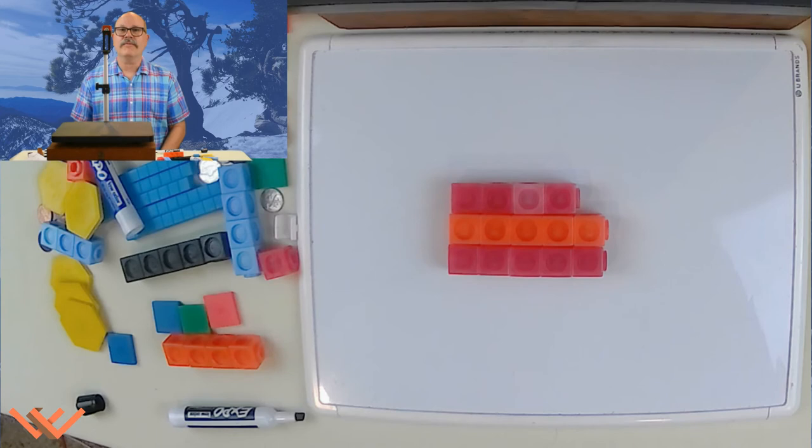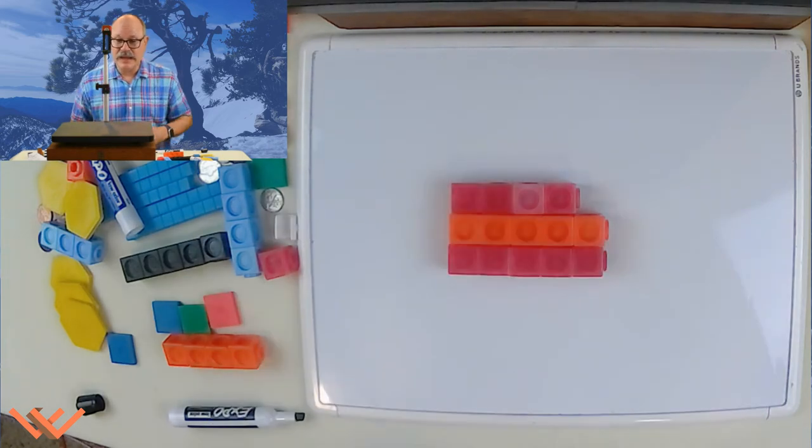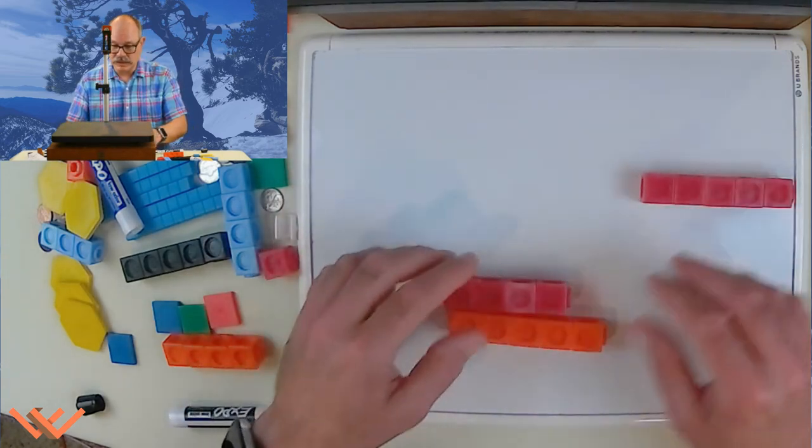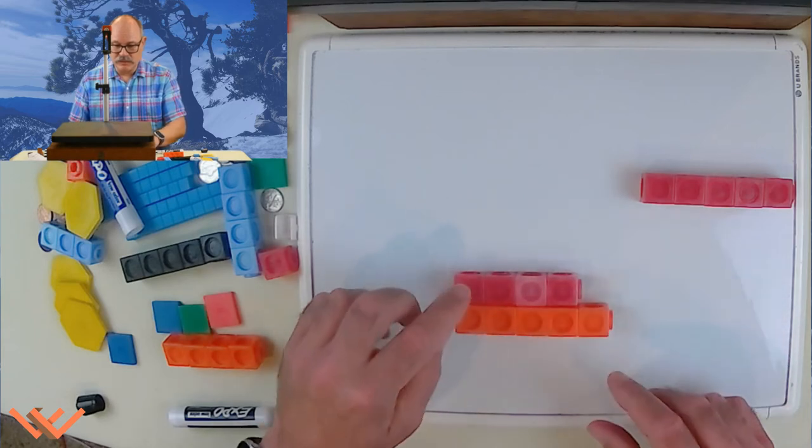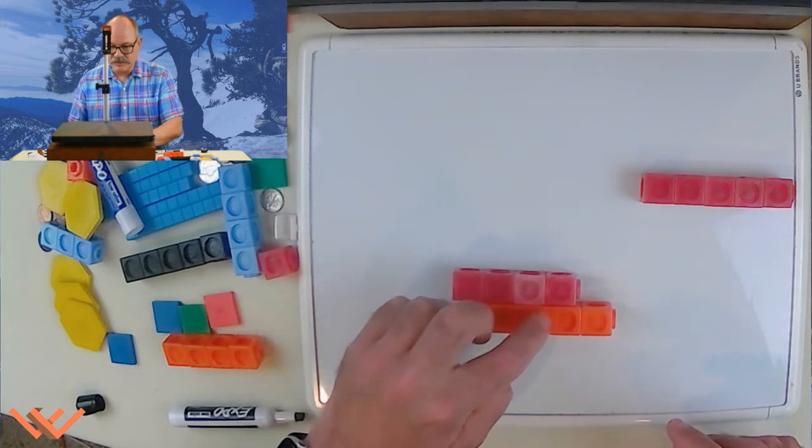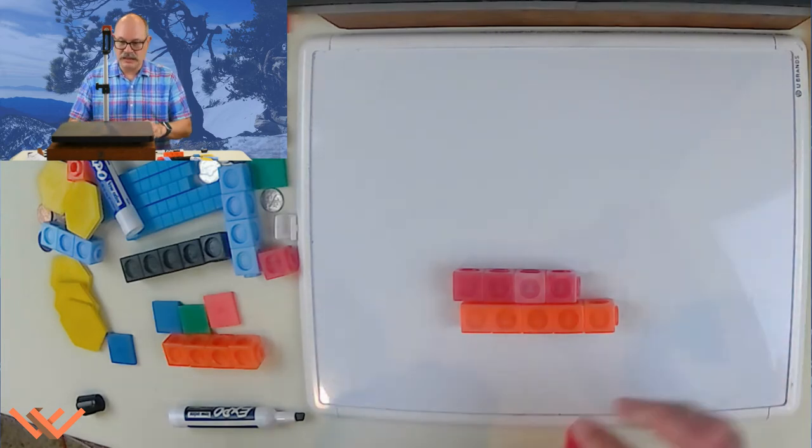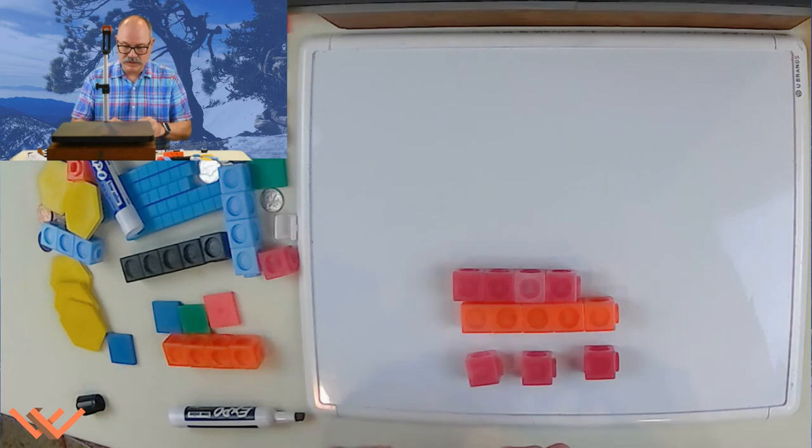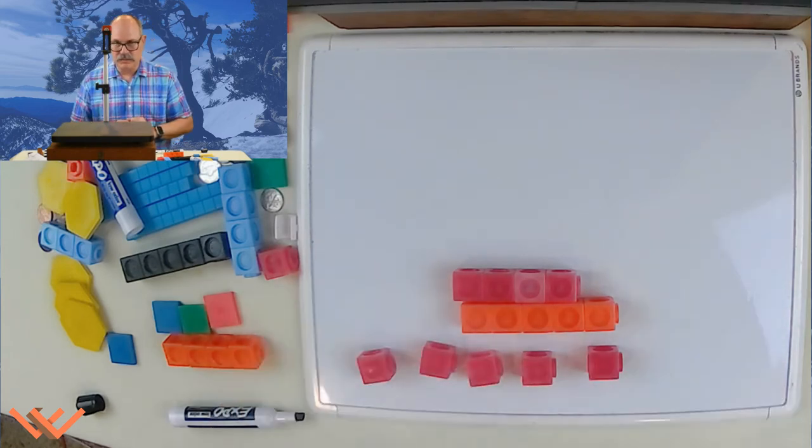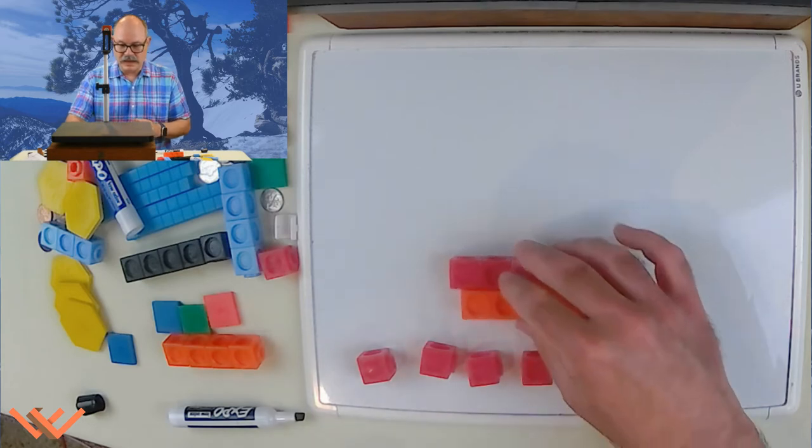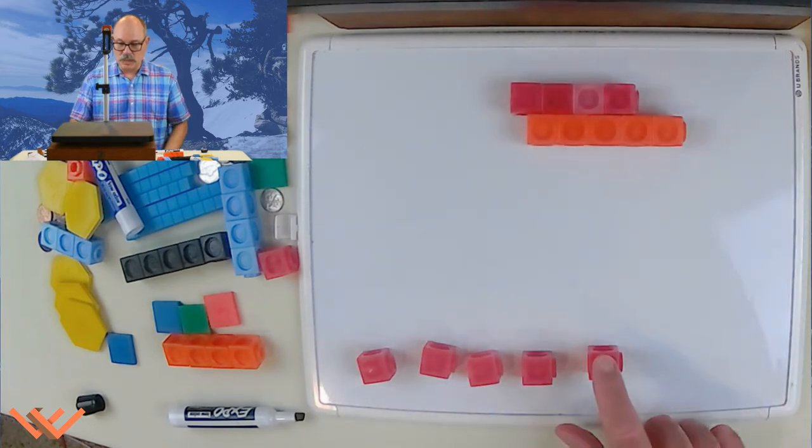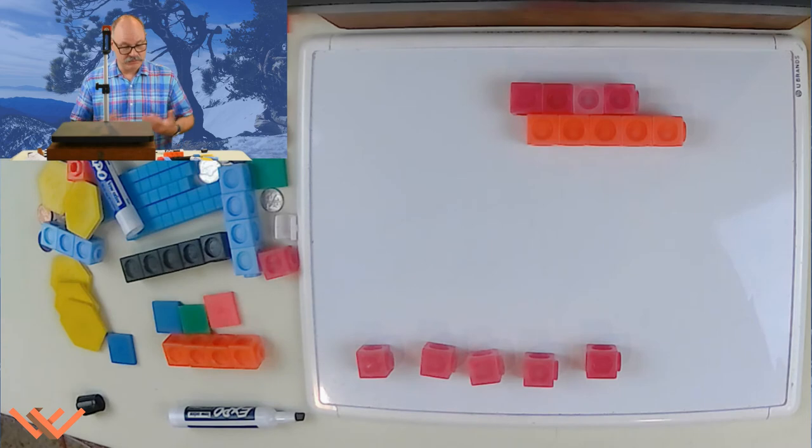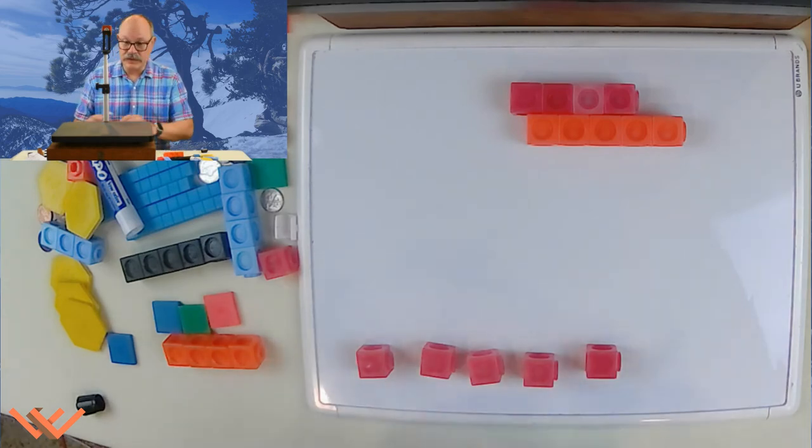Our next numbers are 14 minus 9. We can count up, but let's use the blocks this time. So hold on a second. So if I have 9 right here. And I go, there's 1, 2, 3, 4, 5, 6, 7, 8, 9. And then I would have to add a block, 9, 10, 11, 12, 13, 14. So if I remove that 9, how many do we have left? 1, 2, 3, 4, 5. We have 5.